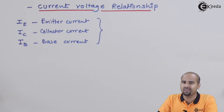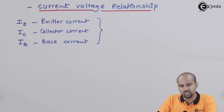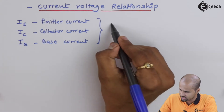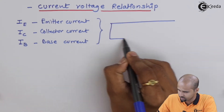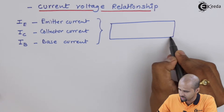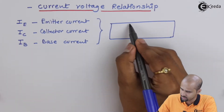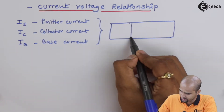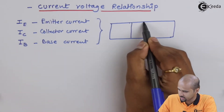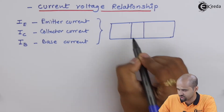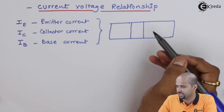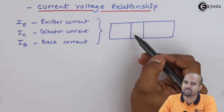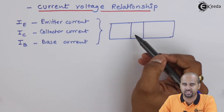These three currents are interrelated with each other. In a simple BJT, as far as area is concerned, base has very less area and collector has very large area. As far as doping is concerned, emitter is heavily doped, collector is moderately doped, and base is lightly doped.